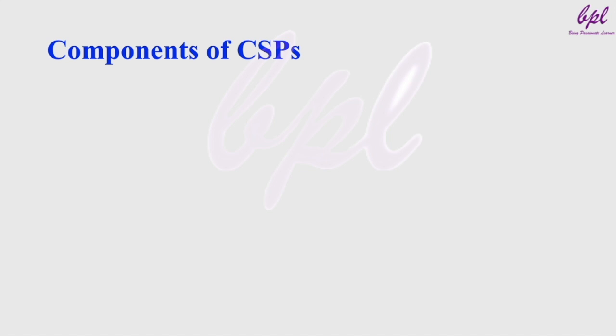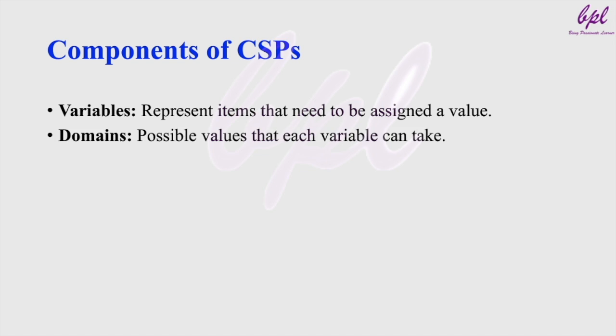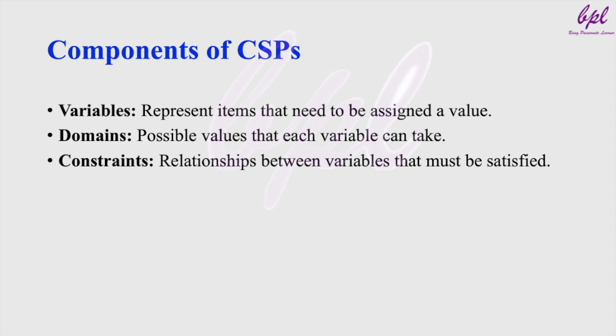Now let us see what the components of a CSP are. A CSP consists of three main components: variables, domains for those variables, and constraints. Variables represent items that need to be assigned a value — they can represent any entity such as a time slot, colors, or numbers. The domain refers to the possible values each variable can take. Constraints are relationships between variables that must be satisfied; they specify which combinations of values are valid. For example, in a scheduling problem, constraints could specify that two tasks can't occur at the same time.